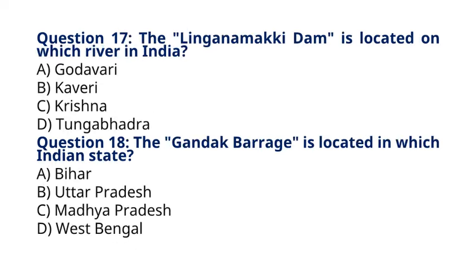Question 17: The Linganamakki Dam is located on which river in India? A. Godavari, B. Kaveri, C. Krishna, D. Tungabhadra. The correct answer to question 17 is option C, Krishna. The Linganamakki Dam is built across the Krishna River in the state of Karnataka.